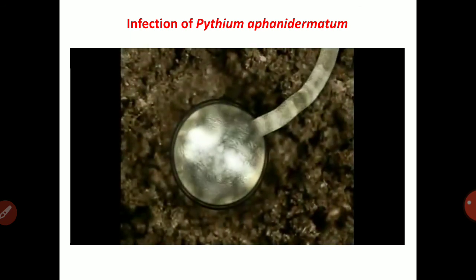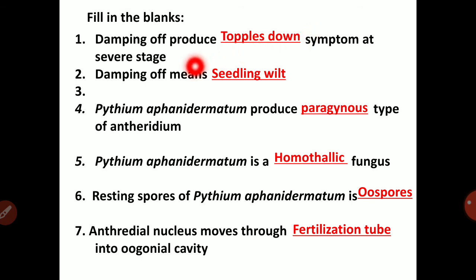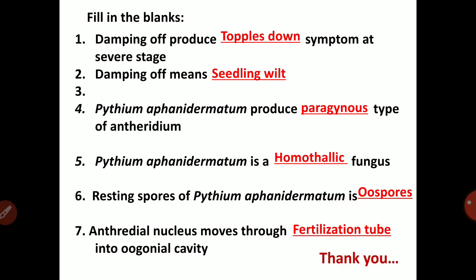This is about damping off disease and the life cycle of Pythium aphanidermatum. Key points: Pythium aphanidermatum produces paragynous type of antheridium. It is a homothalic fungus. Resting spores are oospores. Antheridial nucleus moves through the fertilization tube into the oogonial cavity. Damping off produces the toppling-down symptom at severe stage and means seedling wilting. Thank you.